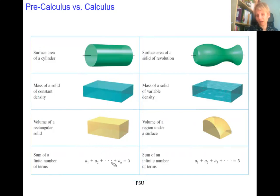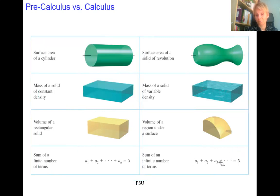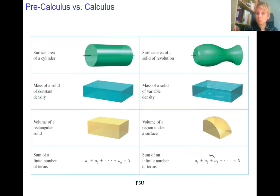A sum of a finite number of terms — even a very large finite number — can be handled without calculus. But the sum of infinitely many terms requires calculus. You might wonder: is it even possible to get the sum of infinitely many terms? Yes — limits will be involved.